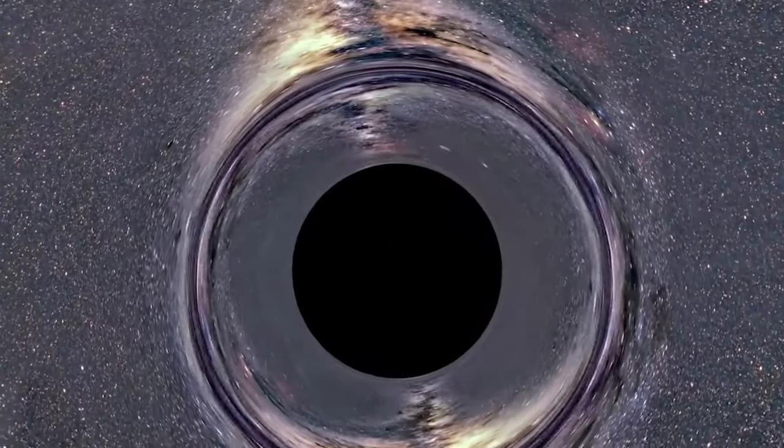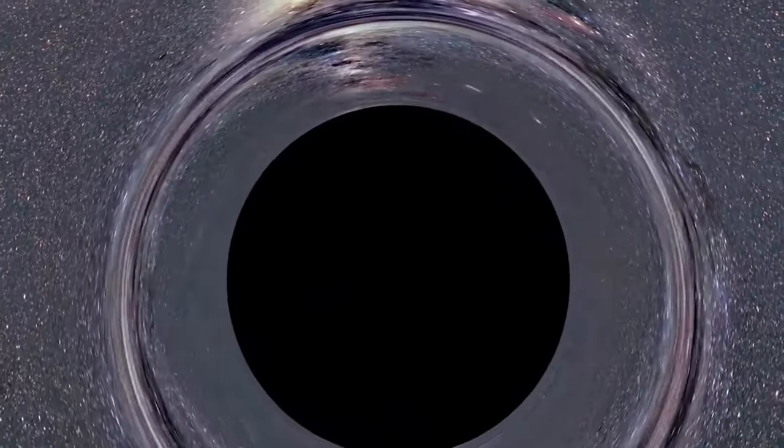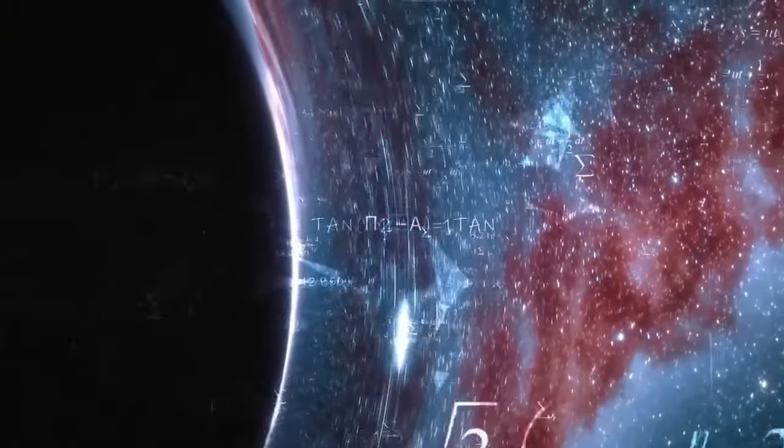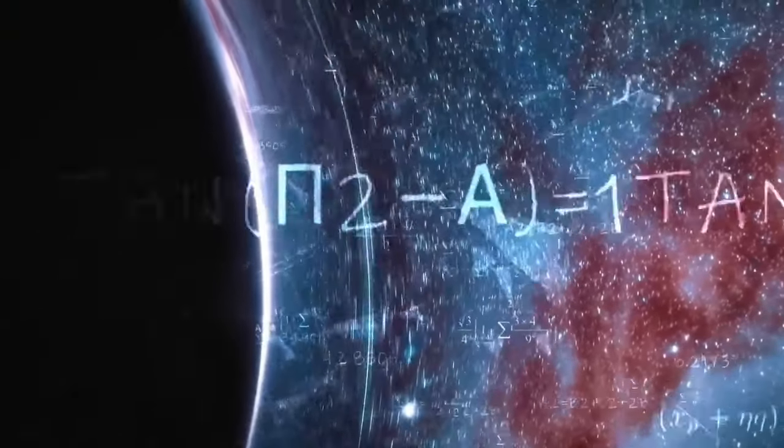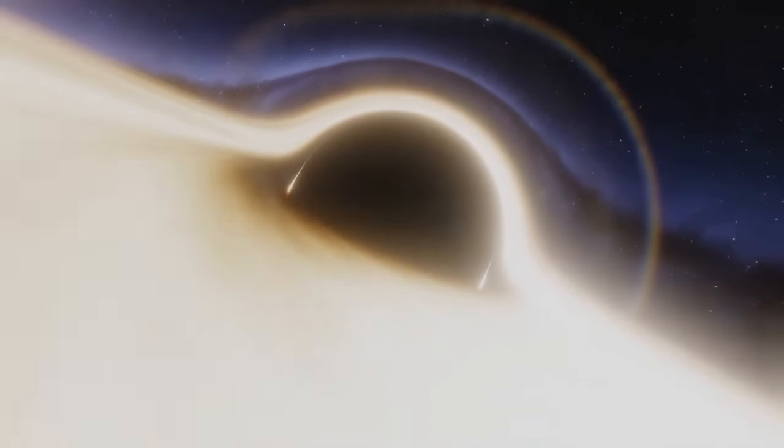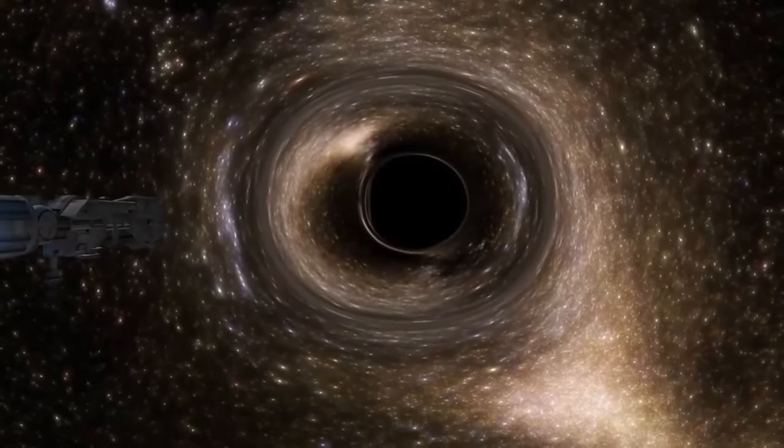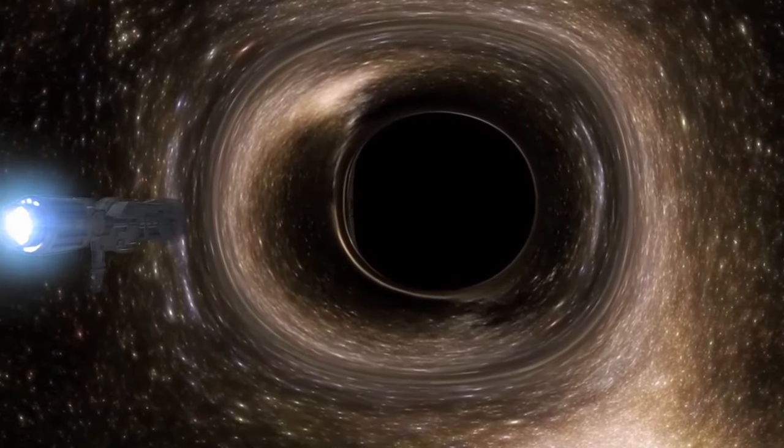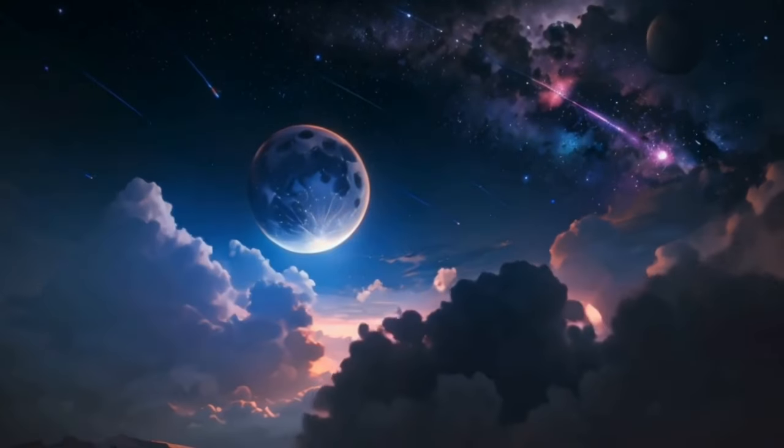But what happens to the information of objects that fall into a black hole? According to the laws of quantum mechanics, information, the fundamental form and properties of matter, cannot be destroyed. Yet, as objects and their related information cross the event horizon, they seemingly vanish from our universe.